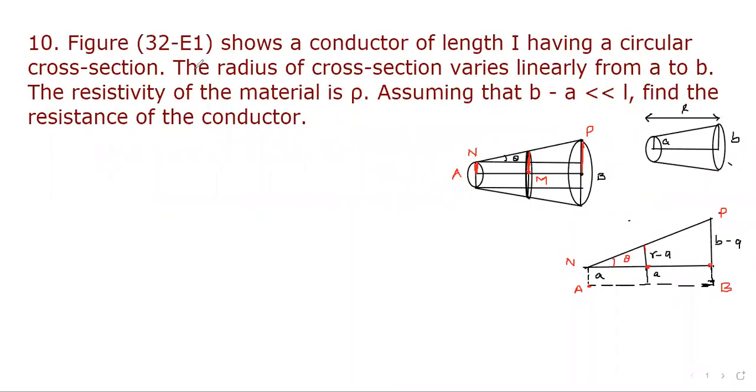Question 10. Figure 32 shows a conductor of length L having a circular cross section. The radius of cross section varies linearly from a to b. The resistivity of the material is ρ. Assuming that b minus a is less than L, find the resistance of the conductor.